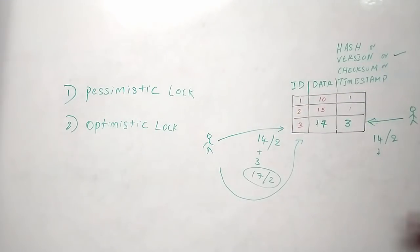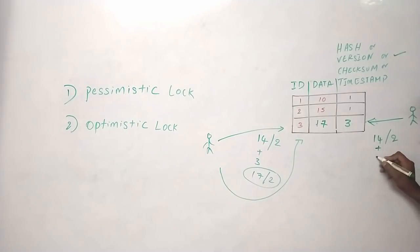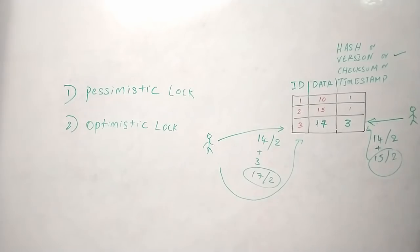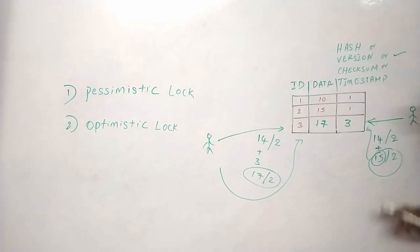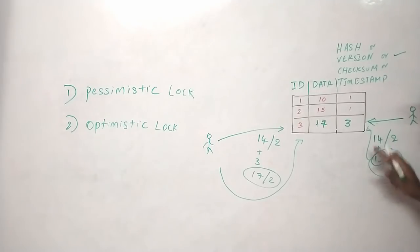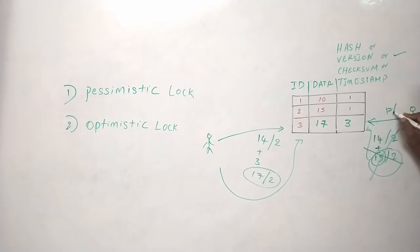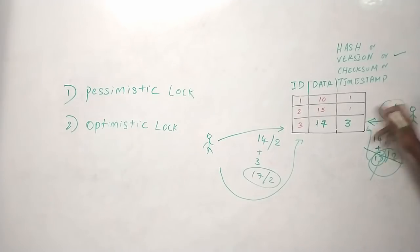Now the first person finishes his operation and tries to update from 14 to 15 with version 2. But when he checks, the database now has version 3 — a mismatch. This tells him that someone came in and modified the data before him. If he updates now, the data will get corrupted. So he must discard his changes and recompute: he reads the new values (17, version 3), applies his increment, and then pushes the update back.